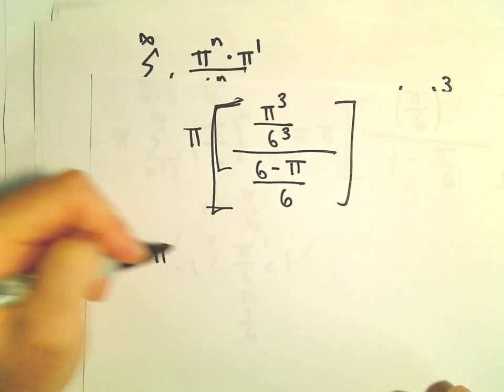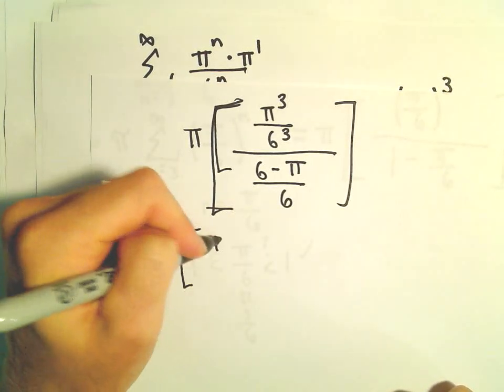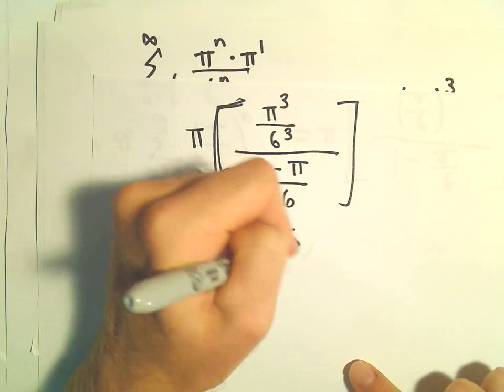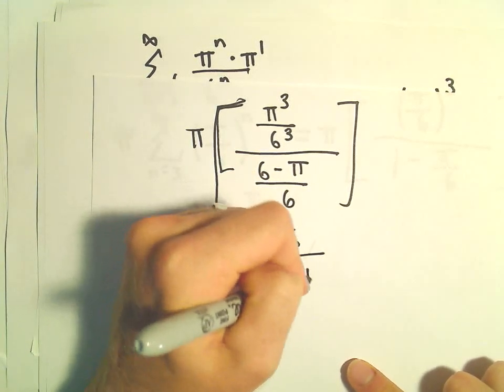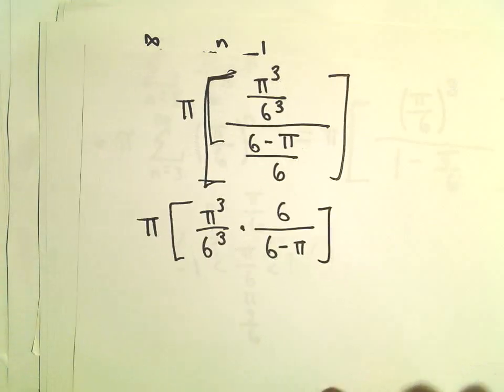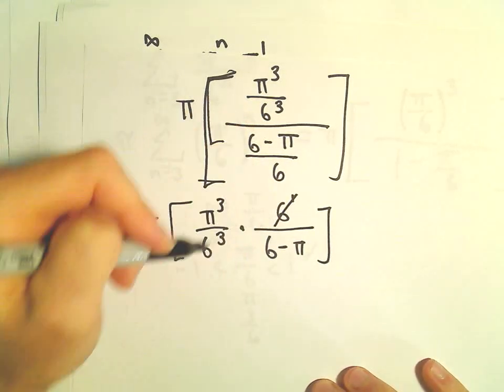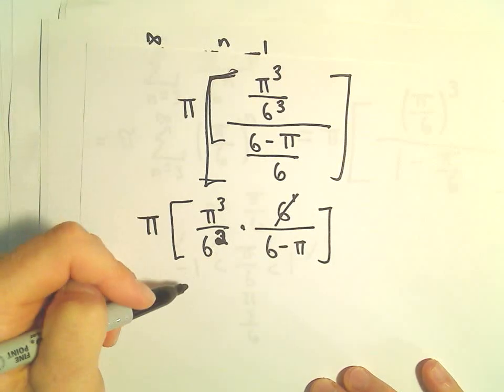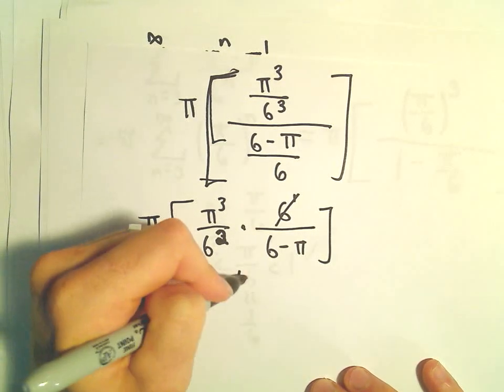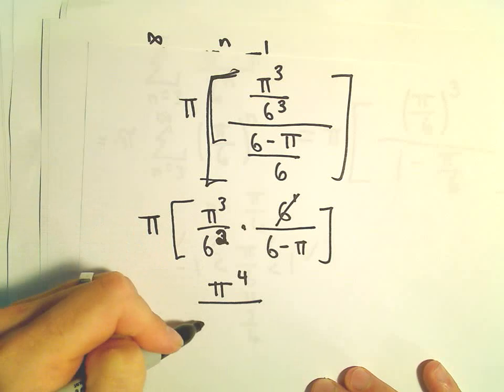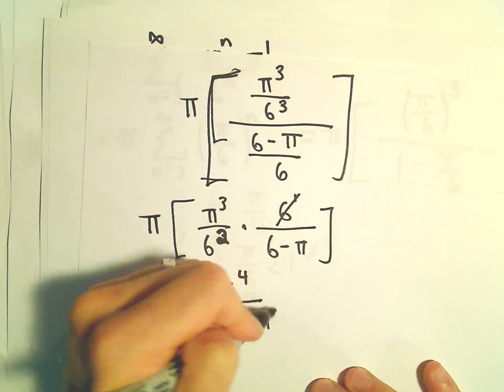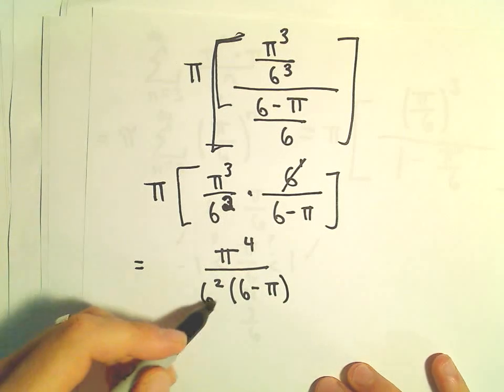So 6 over 6 minus pi over 6. That would be 6 minus pi over 6. So we've got pi to the third over 6 to the third. We could flip and multiply. 6 over 6 minus pi. I guess we can cancel out this 6 with 1 in the bottom. We could multiply the pi through. So it looks like we would have pi to the fourth in the numerator. And then we would have 6 squared times 6 minus pi.